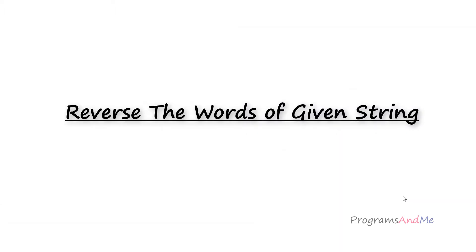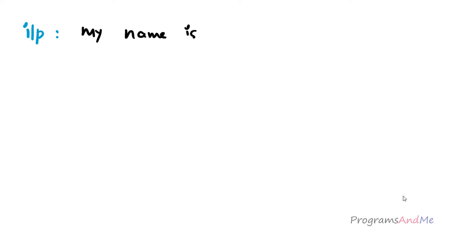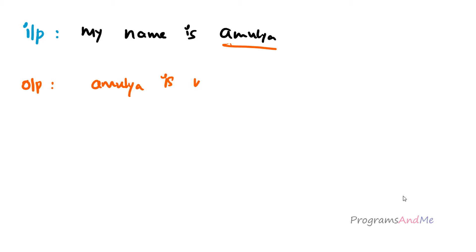The input of this program is a sentence, for example 'my name is Amulya'. The output should reverse the words without reversing the alphabets — so Amulya comes first, then is, then name, then my. We want to reverse the words of the sentence, not the letters within each word.